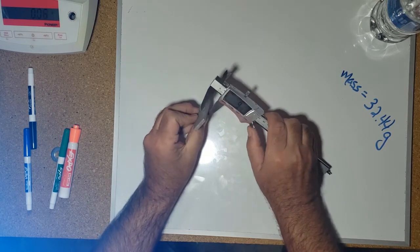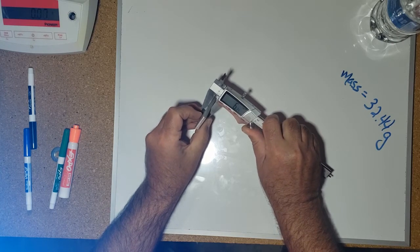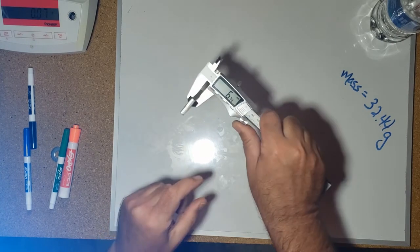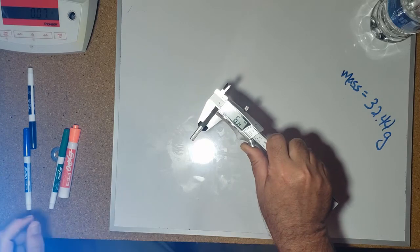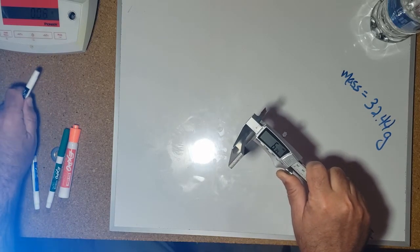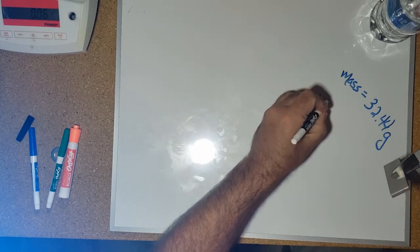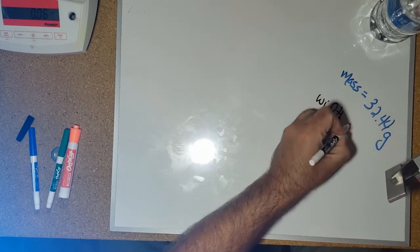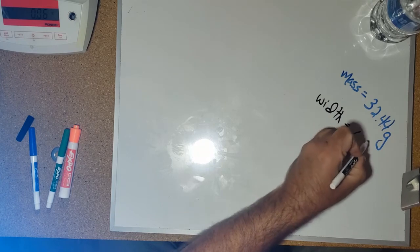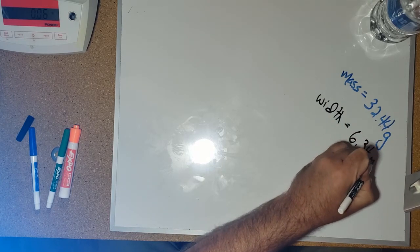Let's measure the very thinnest dimension. If you could read that, it says 6.34. We'll call that the width. The width is 6.34 millimeters.